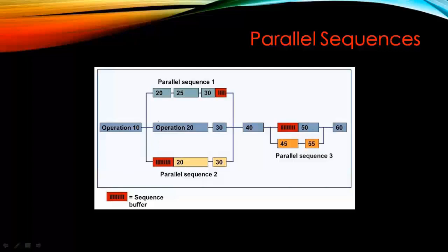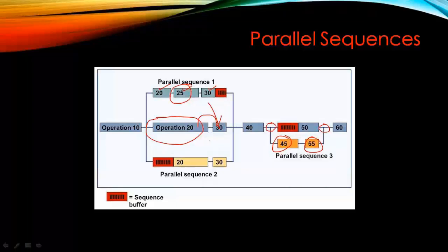Here on the screen you can see operation number 20 — when operation number 20 is running, between 20 and 30 we can run some other operation in parallel. The parallel operation can be numbered 20, 25, and 30 — so only operation 25 can run between 20 and 30. Similarly, between 40 and 60 we can run some other operations as well. As the name says, parallel means more than one operation can be run or planned in SAP.